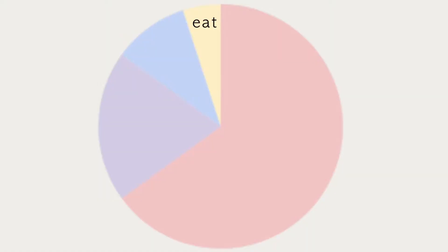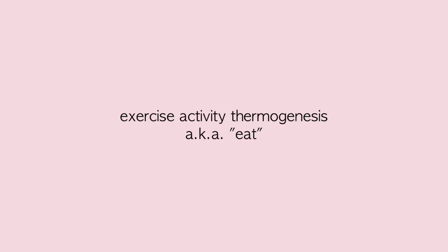The next biggest section is your TEF — Thermic Effect of Food. This is simply the calories it takes your body to digest food. Your food goes into your body in one form and comes out in a very different form, and everything that happens in between — digestion, converting food into fat, ATP, and waste — all of that takes work, and that work is your TEF calories.